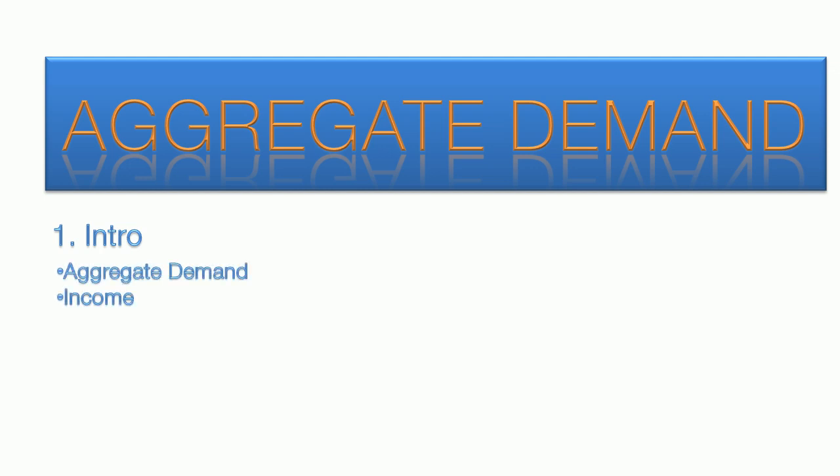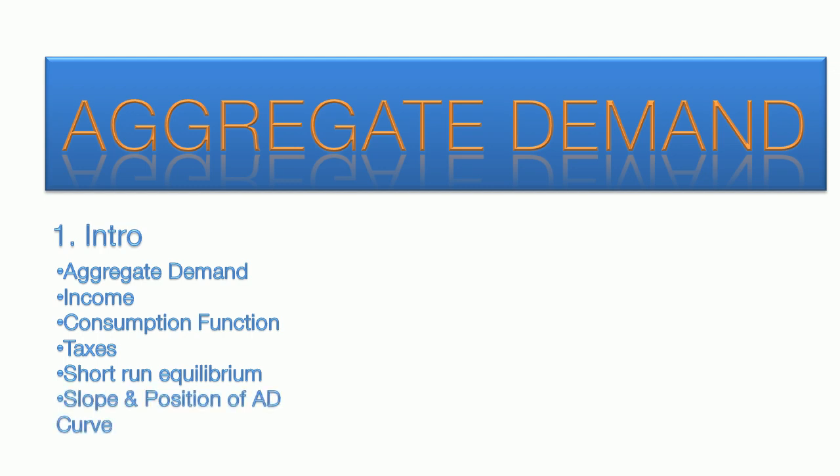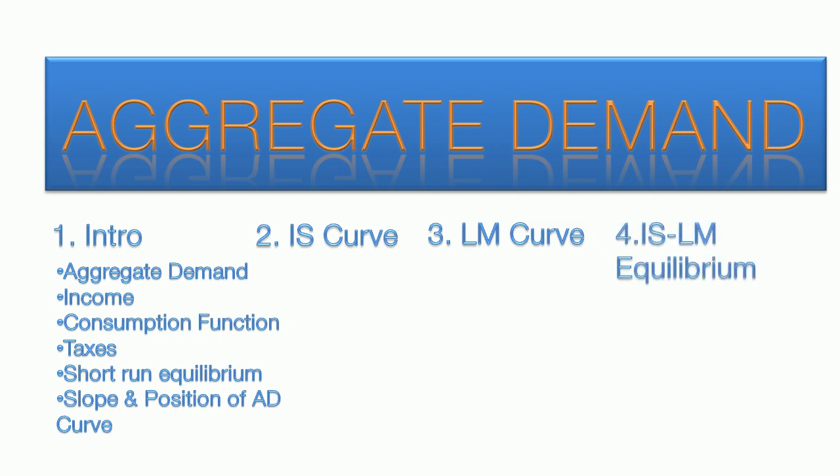This video reviews the components of aggregate demand, income, the consumption function, taxes, finding equilibrium in this short-run model, and the factors affecting the slope and position of the aggregate demand curve. The second video covers the IS curve regarding the goods market, the third video covers the LM curve regarding the money market, and the final video puts the two together to find equilibrium in both markets.